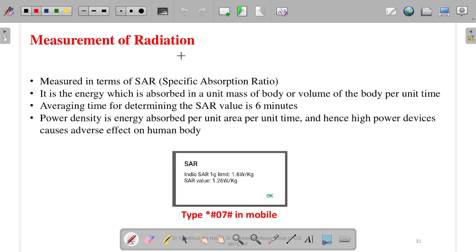Measurement of radiation - if you buy any mobile, you'll see this information on the backside, or you can type *#07# in mobile to get this information. In India, the SAR limit is 1.6 watt per kg. SAR is Specific Absorption Ratio - the energy which is absorbed in unit mass of the body or volume of the body per unit time.